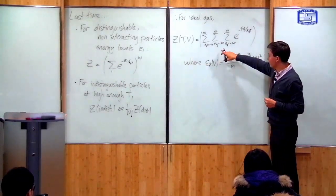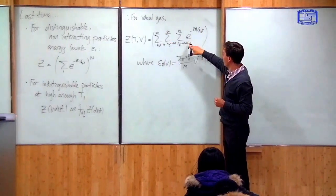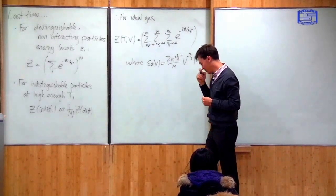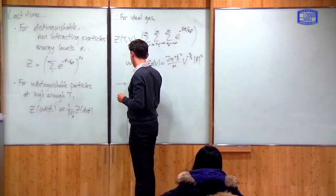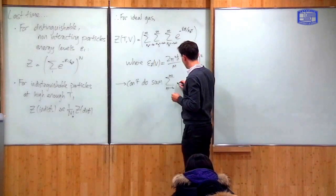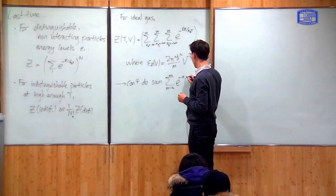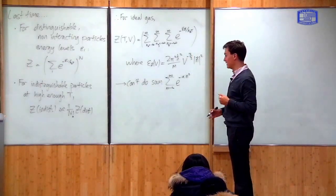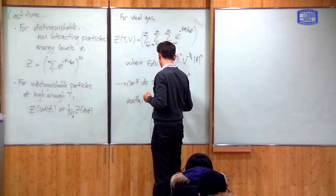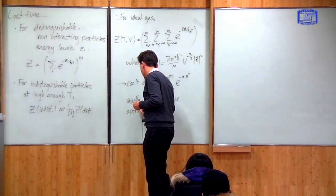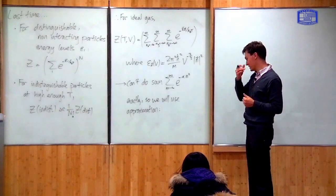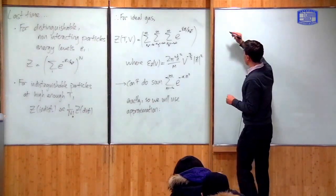In order to calculate this we need to evaluate the sum where N goes from minus infinity to infinity of something that looks like e to the minus a constant times N squared. Now this sum you can't do exactly — the sum of e to the minus N squared you can't do exactly — and therefore we're going to use an approximation. It's called the density of states approximation, and it's going to be very useful throughout the whole of statistical physics.